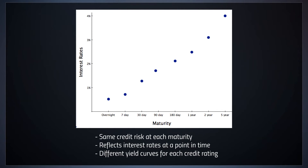The only difference here is the time period, and that's what the yield curve is telling you. A yield curve is only for a certain point in time — a certain day, a certain point only. The interest rate markets are constantly moving, so this would only be good for that time period in which it was taken.